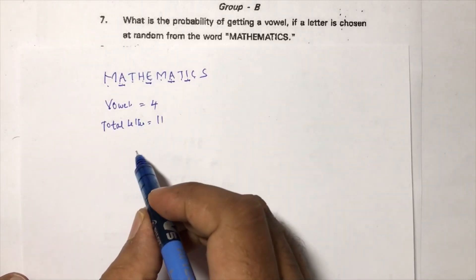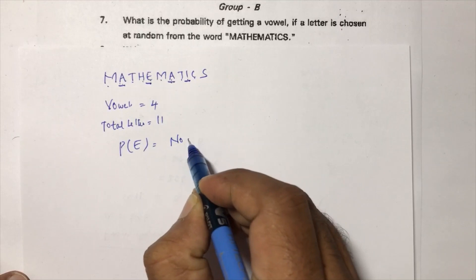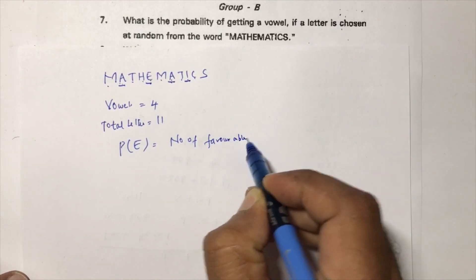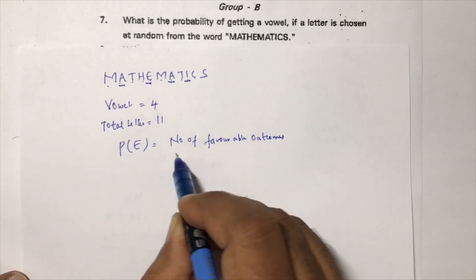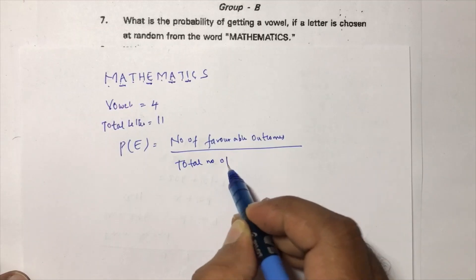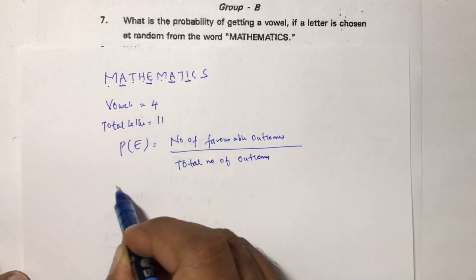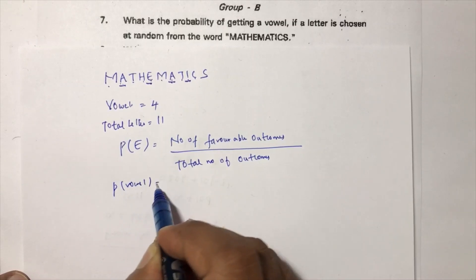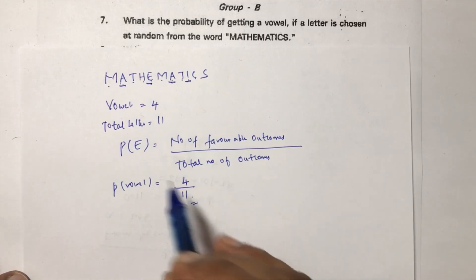The total number of letters in MATHEMATICS is 11. Probability of an event = number of favorable outcomes / total number of outcomes. So probability of getting a vowel = 4/11.